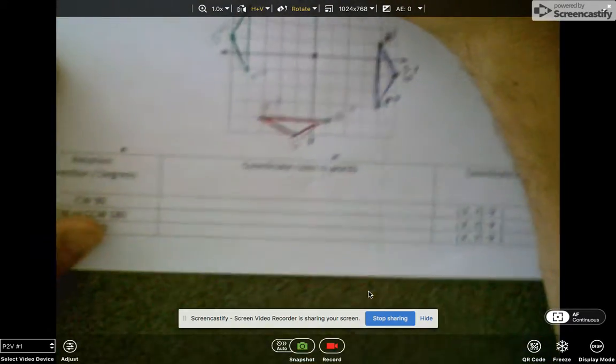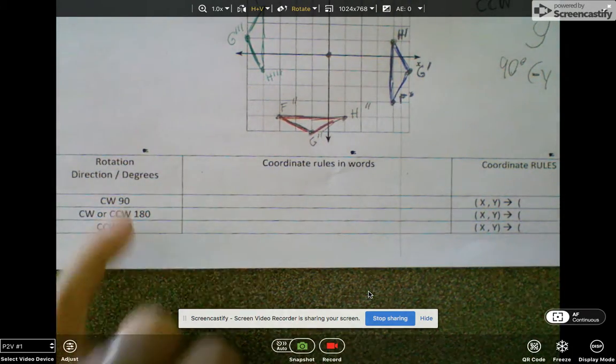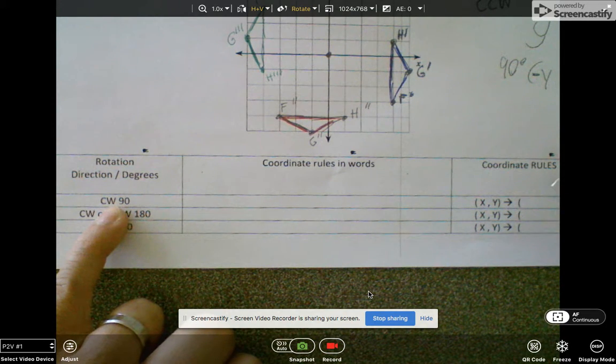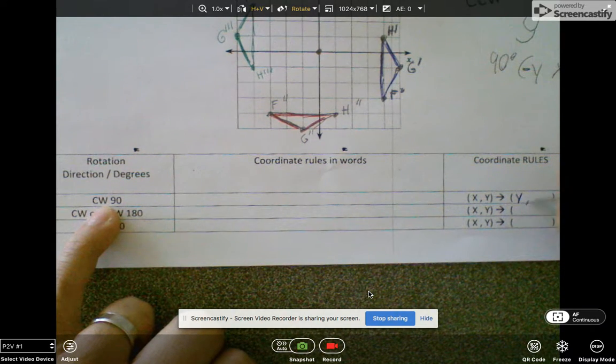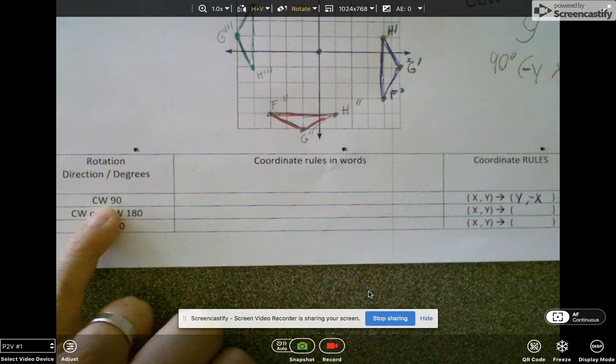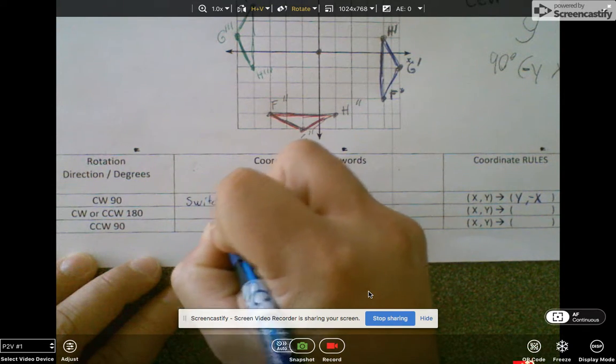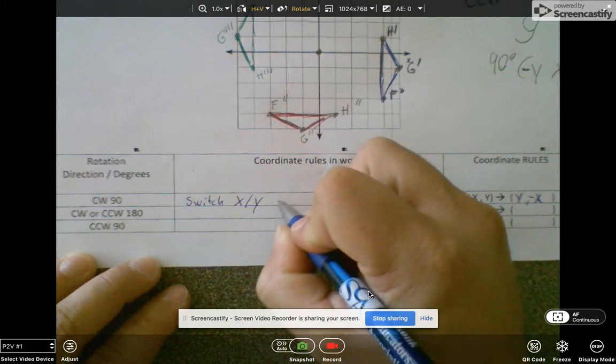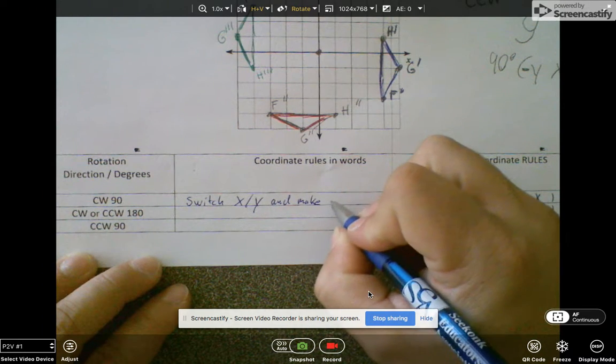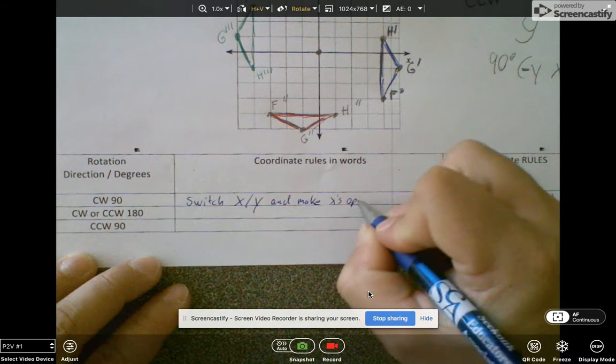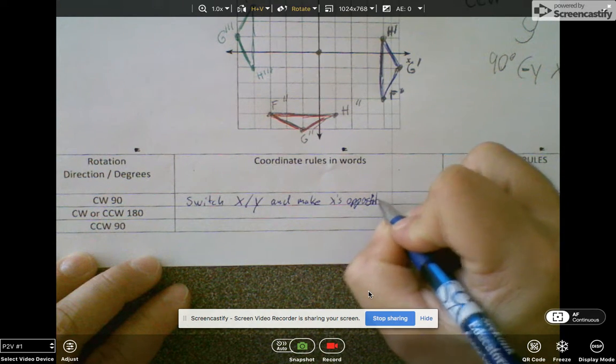So the last part of the video, I wanted to state everything clearly now that we've come up with the rules. The coordinate rules: if it's 90 degrees clockwise, can someone tell me what the rule would be? We're going to switch the Y and X, make X opposite. Let's write that down in words so you have it in your notes. Switch X/Y and make X's opposite.